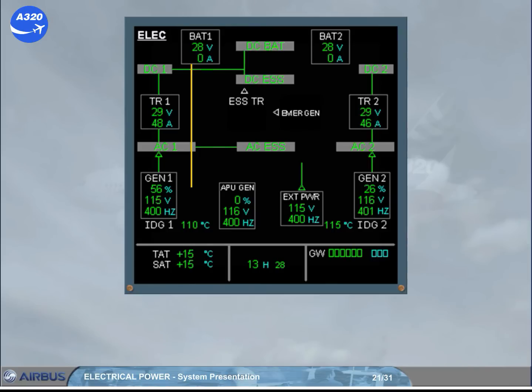You can also notice the different connections displayed via green lines. Let's now locate pilot's controls.